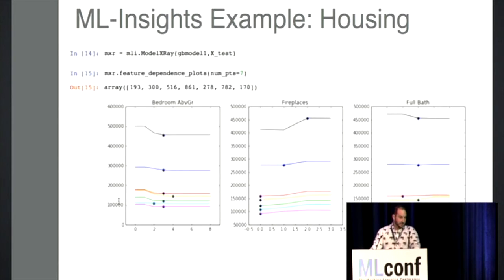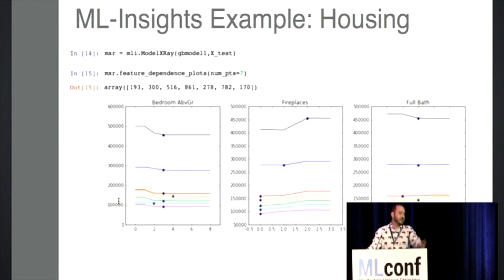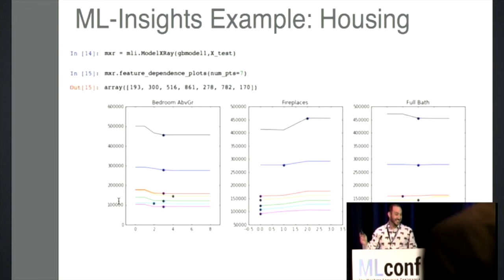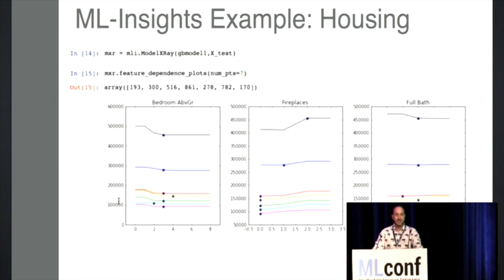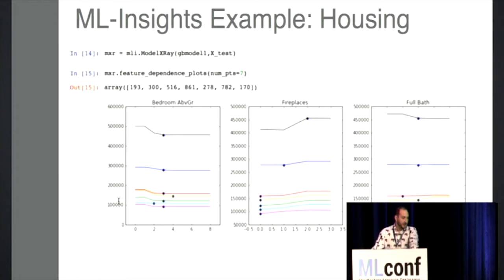Using our package, the first thing you do is run what we call the model x-ray, giving it a model and typically your test set. That takes a while — it does all the pre-computation, changing data points across all the different variables. Then you can call feature dependence plots. Specifying seven random points, the black dot indicates the actual starting value for each data point. For example, this top row for bedrooms above ground was a three-bedroom house worth about $450,000. Counter-intuitively, the model predicts it would actually be worth $500,000 if it were only a one-bedroom house.